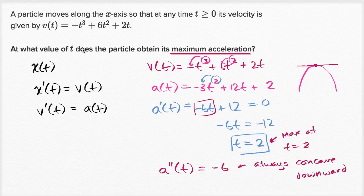So at what value of t does the particle obtain its maximum acceleration? At t = 2.